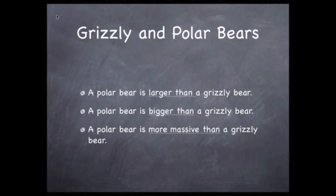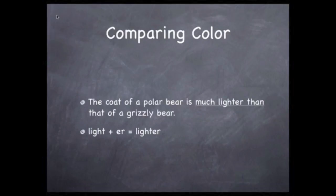You could also use the word massive, but don't add an r to the end. You would say or write that a polar bear is more massive than a grizzly bear. Another notable difference is the color. The fur of polar bears is much lighter than a grizzly, so much so that it's white. So we could say that the coat of a polar bear is much lighter than that of a grizzly bear. Again, we apply our rule to making an adjective a comparative by adding er to the end of the word.